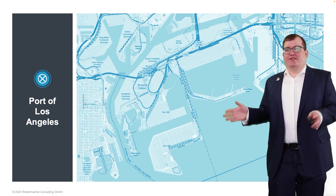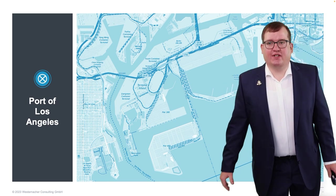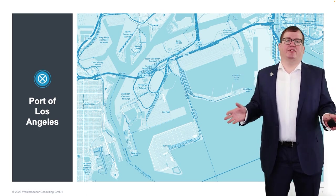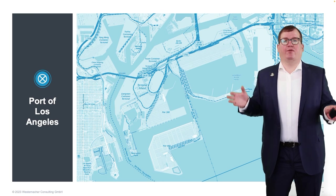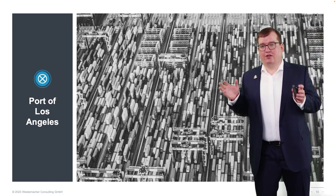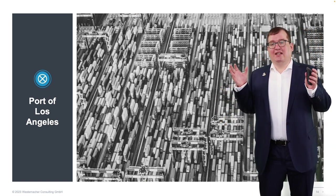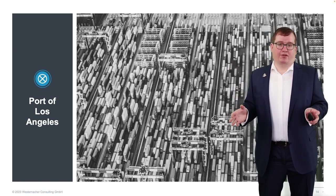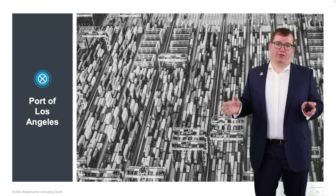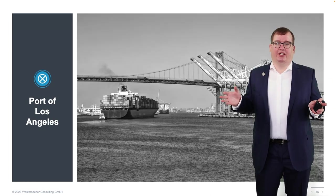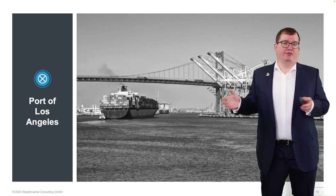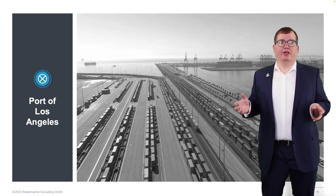To give you some impressions of what we are talking about: here is a map of the Port of Los Angeles — a massive compound with a terminal for container operations. This is an impression of the gantry cranes used there. These gantry cranes are not used for the transshipment of containers; they are used for the storage of containers. All these different lanes and stacks are just for storing empty or full containers. These are the container cranes directly used to discharge from and load onto the vessel.